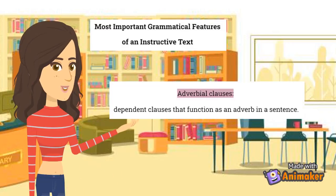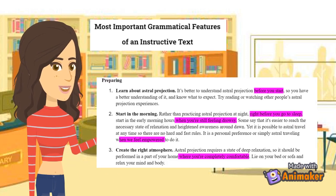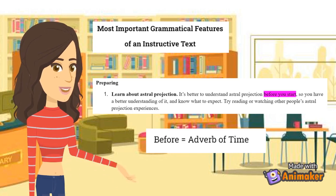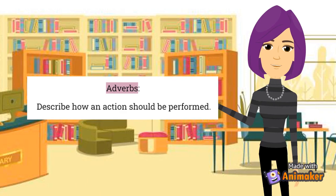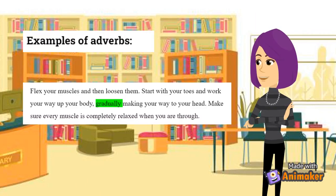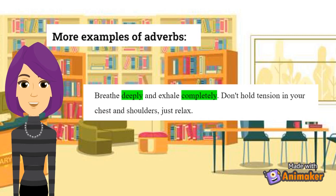Another important grammatical feature are adverbial clauses, which are dependent clauses that function as an adverbial sentence. For example: "It is better to understand astral projection before you start." Here, "before you start" is the adverbial clause, which contains an adverb of time leading the clause. Adverbs are also important grammatical features in the text, since they describe how an action should be performed. Examples are "gradually," referring to how you should make your way to your head; "completely," which tells us how the reader should relax his or her muscles; and "deeply" and "completely," indicating how the reader should breathe and exhale.